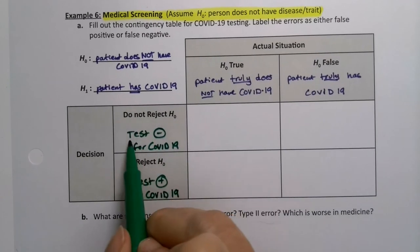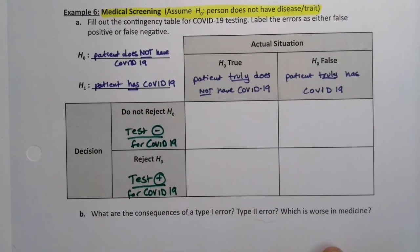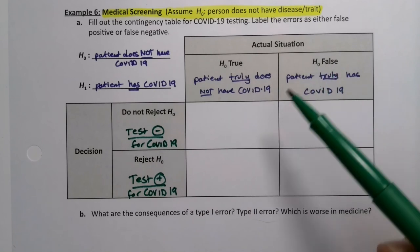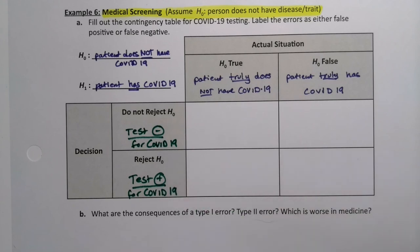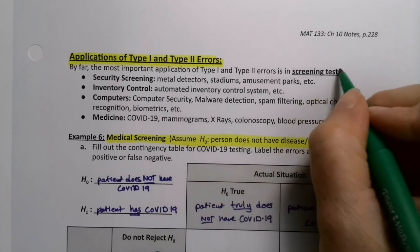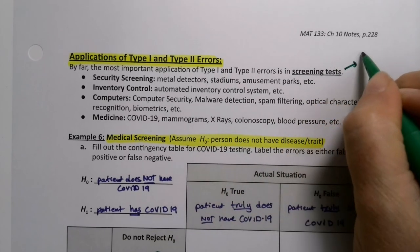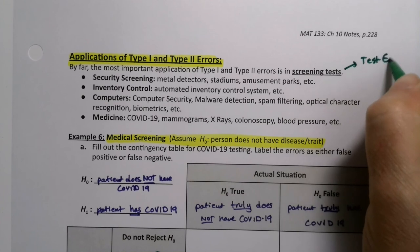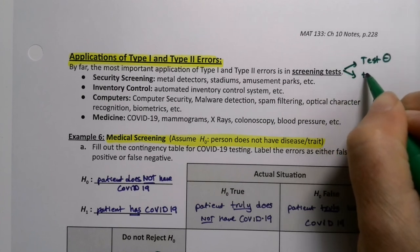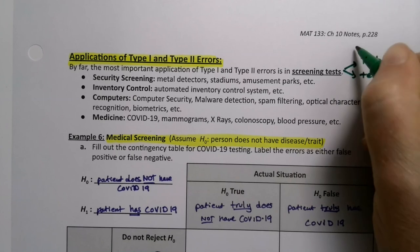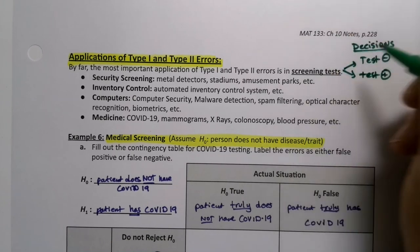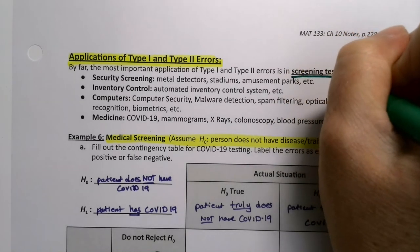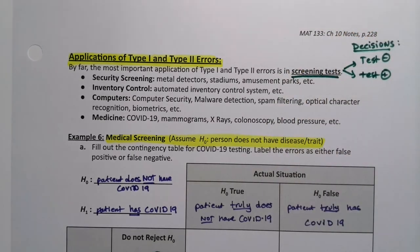For screening tests, the decisions will be test negative or test positive — most of the time. Just like walking through a metal detector: if it doesn't beep, you're testing negative; if it does beep, you're testing positive. That's how most screening tests work.